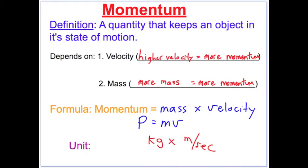Momentum is a quantity that keeps an object in its state of motion. It depends on velocity and mass. The higher the velocity, the more momentum. The higher the mass, the more momentum the object has.